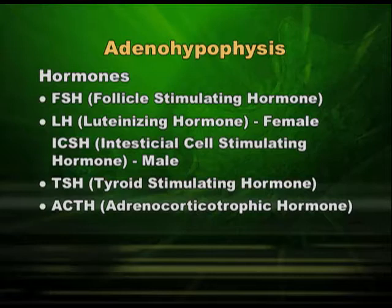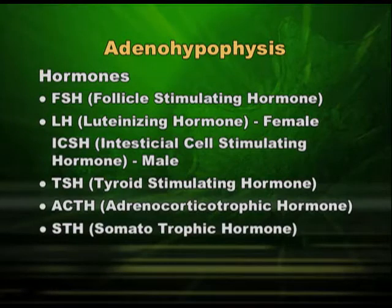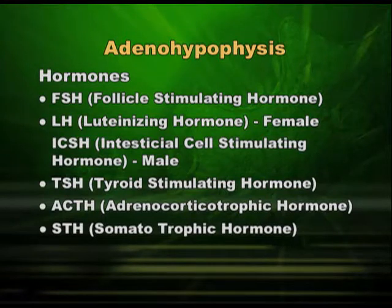The next hormone is growth hormone, also called STH — somatotrophic hormone. As the name indicates, it acts on each and every somatic cell in our body and hence helps in the growth of the body. This growth hormone also comes from the anterior pituitary. For these five hormones — FSH, LH or ICSH, TSH, ACTH, and STH or growth hormone — we have releasing factors in the hypothalamus.